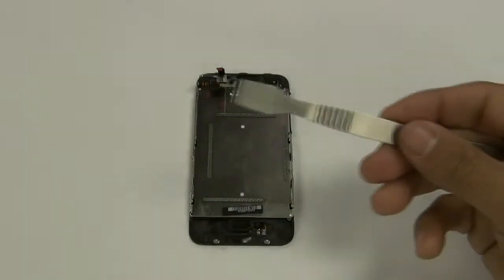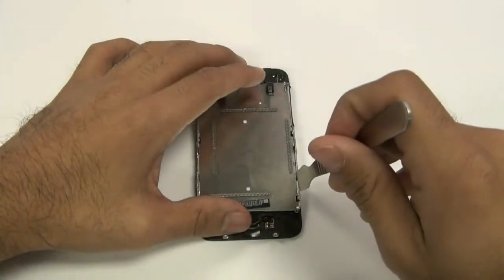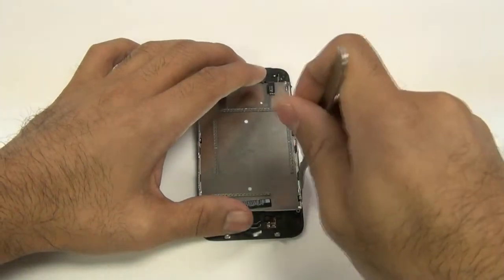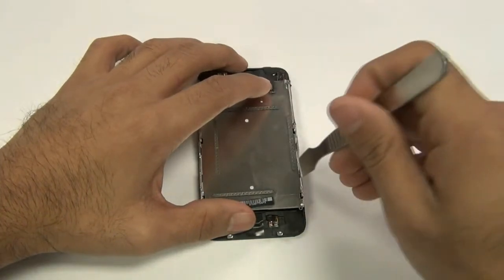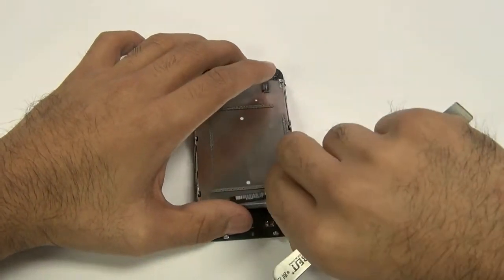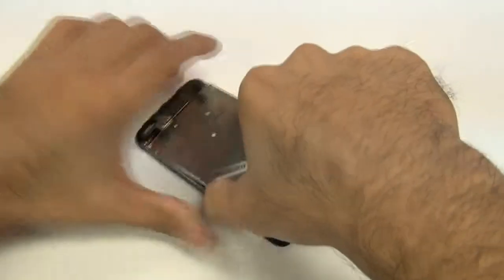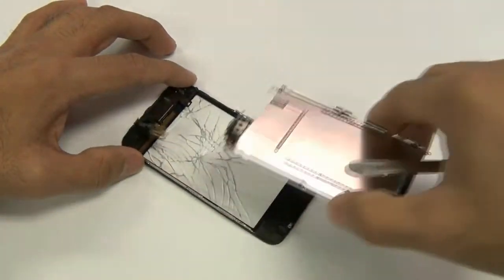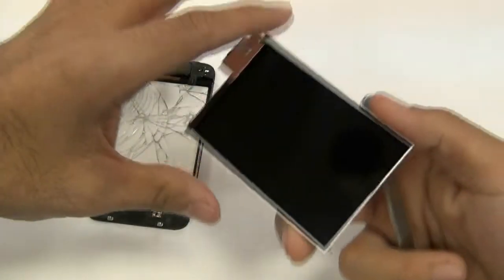Next, using a spudger or pry tool, place it between the two grommets of your LCD back plate and mid-frame to separate the LCD. If your LCD is not damaged, be very careful during this process not to actually damage your LCD, as it can crack very easily.